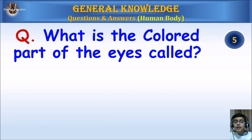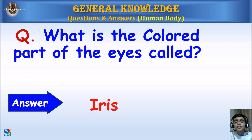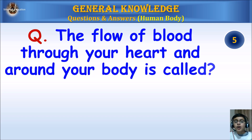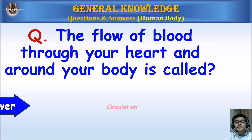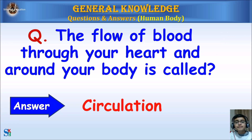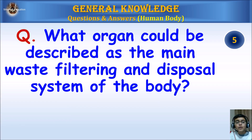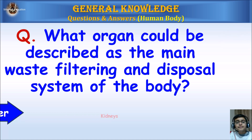What is the colored part of the eye called? Answer: Iris. The flow of blood through your heart and around your body is called? Answer: Circulation.